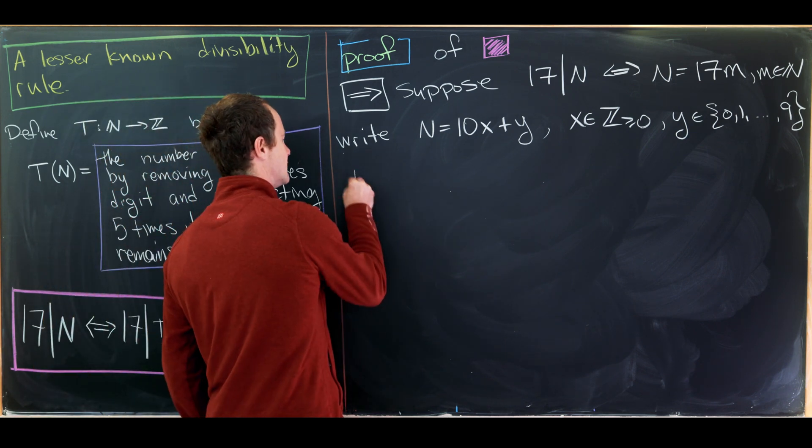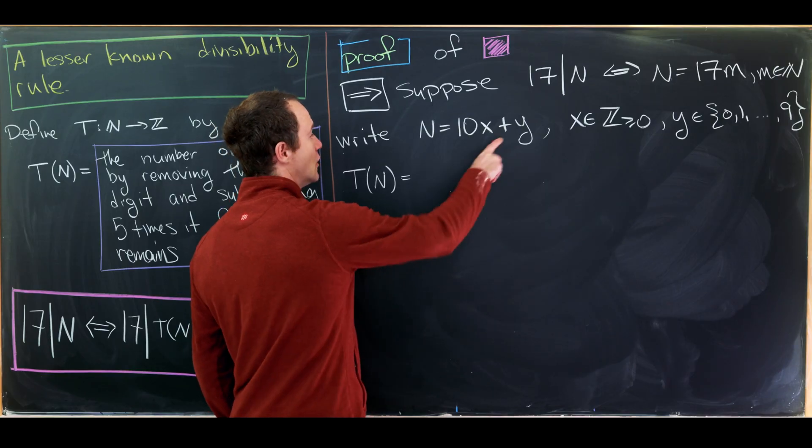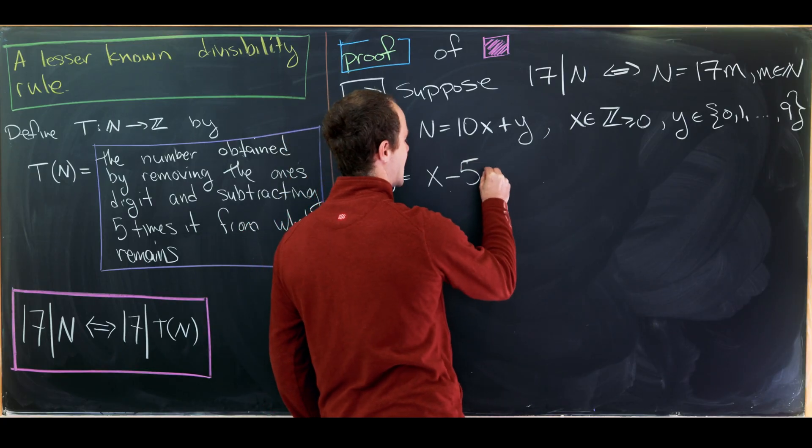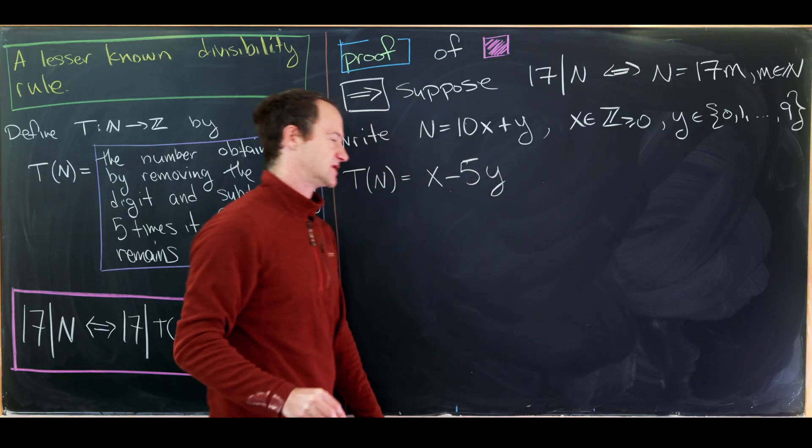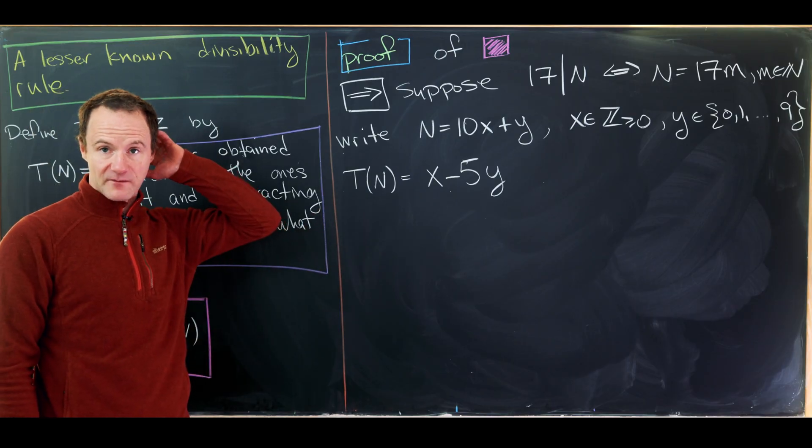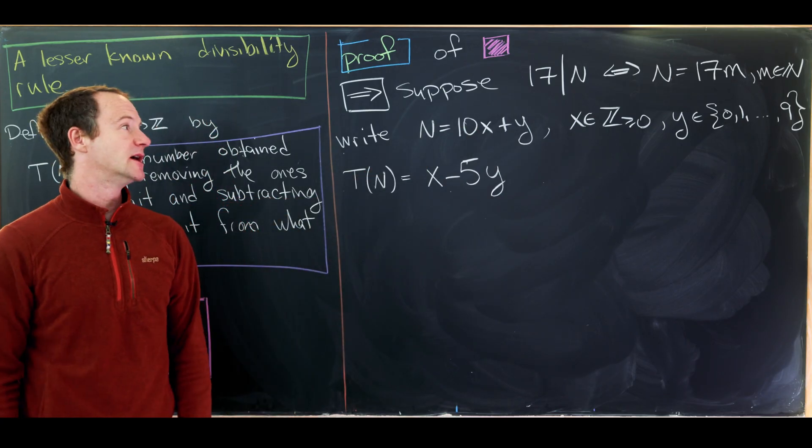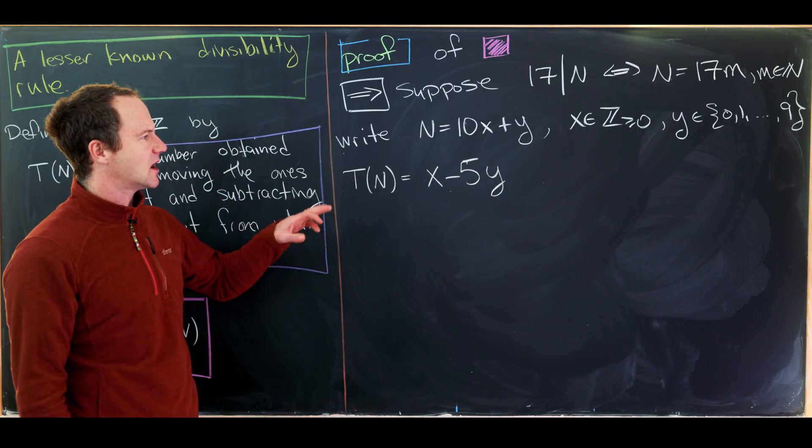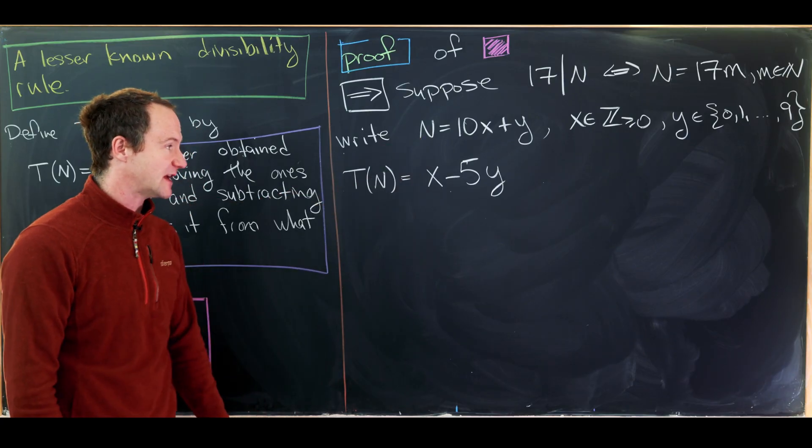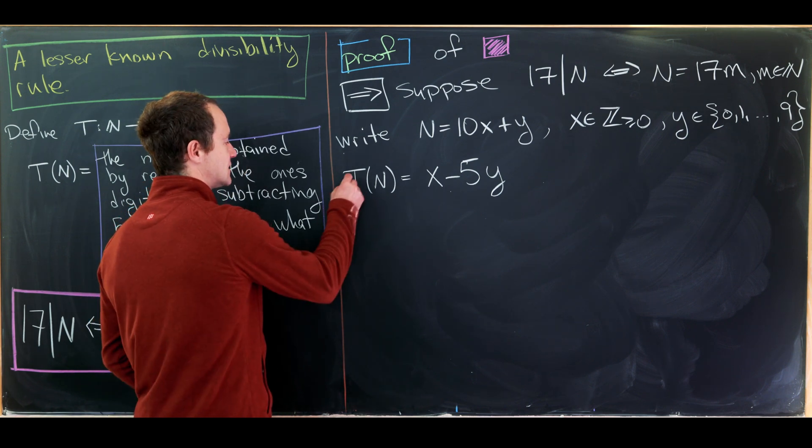And then from here, let's note that T evaluated at n is equal to, well, if we remove this ones digit, we'll be left with x. And now we subtract five times that ones digit, so five times y. Now looking at this, it doesn't seem super helpful yet. And we can't use anything about the divisibility of our original number by 17. That is unless we maybe multiply this by 10 so we can recreate our original number in this current setup. So let's do that.